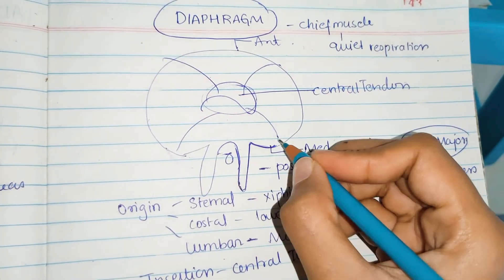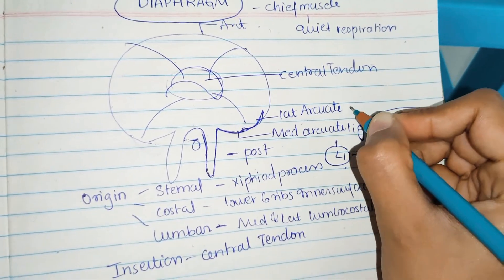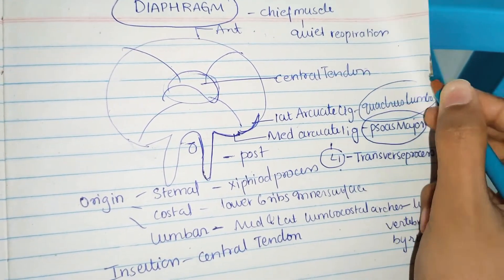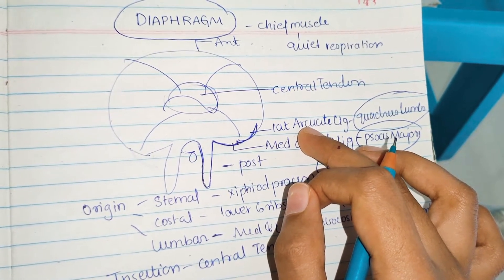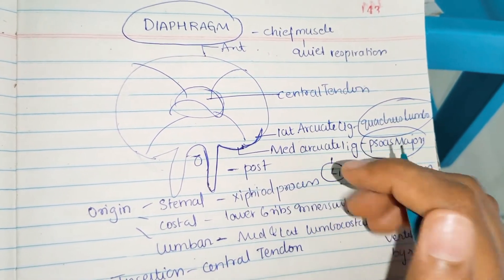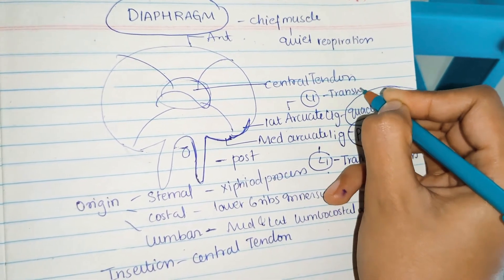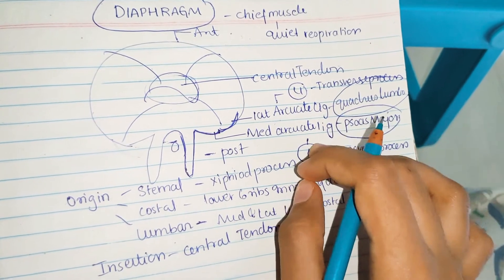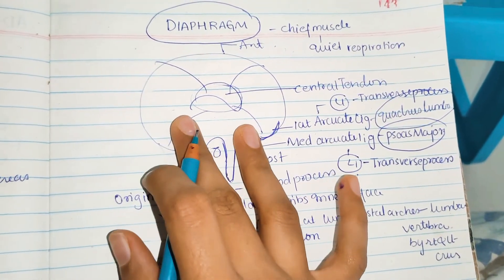The lateral arcuate ligament is derived from the quadratus lumborum muscle. It is attached medially to the lower part of the 12th rib and also to the transverse process of L1. So: medial arcuate ligament comes from psoas major; lateral arcuate ligament comes from quadratus lumborum.